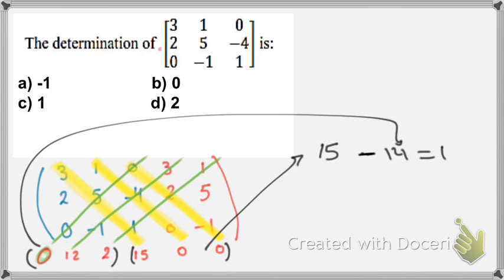is equal to 1. Notice that I added 15 and 0 and 0 to give me 15, and I added 0, 12, and 2 to give me 14. So 15 minus 14 is equal to 1.